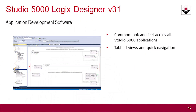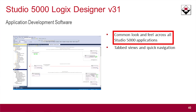One of the first things you'll notice is there's a common look and feel across all the 5000 products now. The icons, the nomenclature, and things like that are similar to the other elements like View Designer, Architect, and things like that.